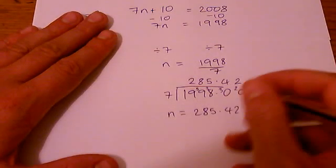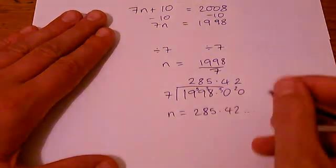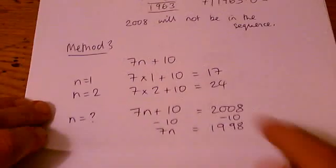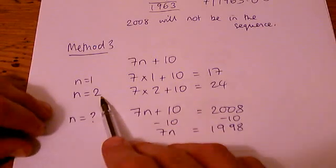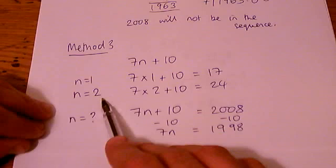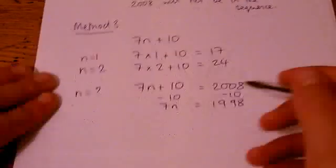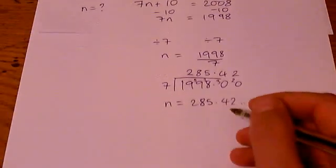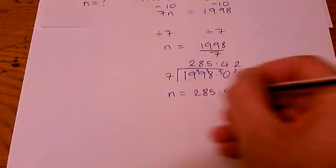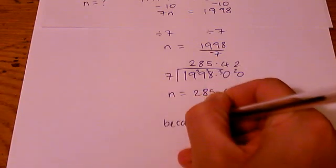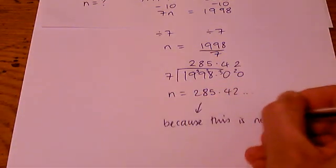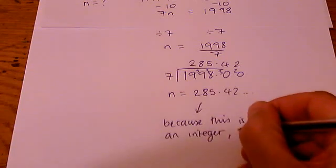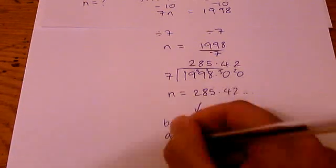Now, what that's telling me is that 2008 is not a whole number term in this sequence. If you remember, all of the terms that I worked out in the sequence had to use a whole number. n has to be a whole number because I want either the first term or the second term or the third term or the 53rd term. But if n turns out to be a decimal like this, that means that the term is not a number in the sequence. So, we can say because this is not an integer, integer means whole number, 2008 is not in the sequence.